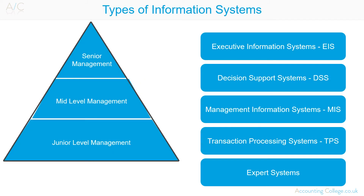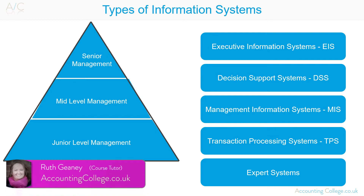Types of information systems. Information systems like transaction processing systems, management information systems, decision support systems, executive information systems, and expert systems are used to convert internal and external data into useful information for an organisation.